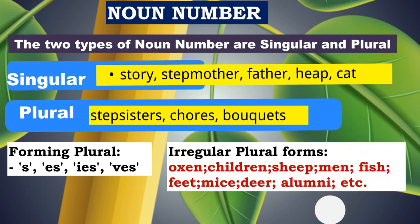But there are irregular plural forms also. For example, ox becomes oxen, child becomes children, sheep remains sheep, man becomes men, woman becomes women. Fish remains fish and not fishes. Foot becomes feet, mouse becomes mice, deer remains deer in plural. Alumnus is singular, alumni is plural. So we have to be very careful even in our speech how we use these plural or singular forms.